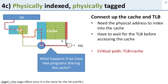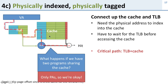What if two programs share this cache? No problem whatsoever — we're only using physical addresses. Every program has its own physical addresses, so each one looks up by physical address, finds the physical tag, and they'll be different. There's no conflict.